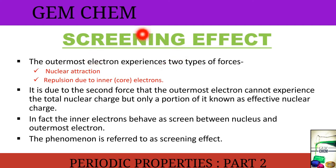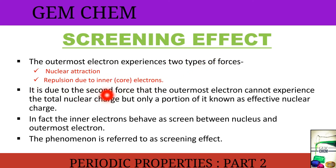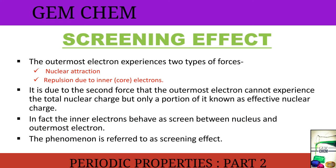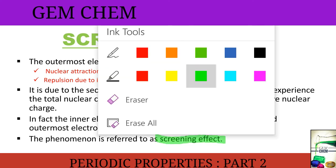Now we will see what is known as the screening effect. From the word, we can understand it is related to screening or hindrance. The outermost (valence) electron experiences two types of force: nuclear attraction from the nucleus, and repulsion from the inner electrons. Due to this repulsion, the outermost electron cannot experience the total nuclear charge — only a portion of it, known as the effective nuclear charge. The inner electrons form a screen between the nucleus and the outermost electron, and this phenomenon is known as the screening effect.